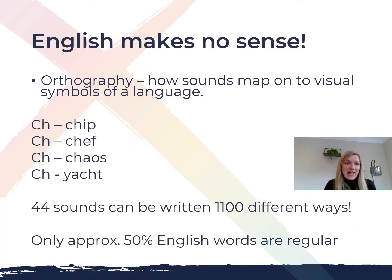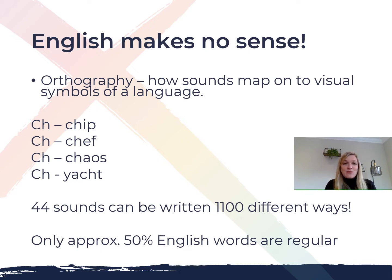It's important to start by saying that English is an incredibly difficult language to learn to read and write, because of its orthography — the way that sounds map onto the visual symbols of a language. Some languages have very few rules and those rules tend to be very reliable in how you pronounce a given sound for a letter or combination of letters — for example Spanish, Italian, and Finnish. They have what's called a shallow orthography.